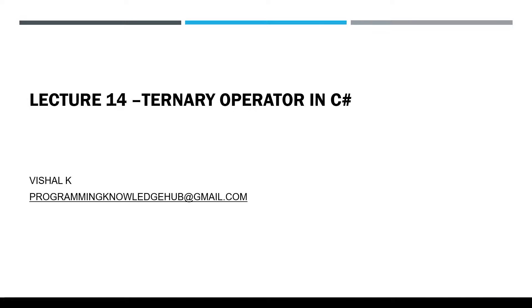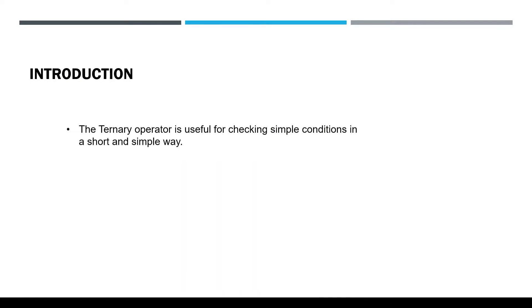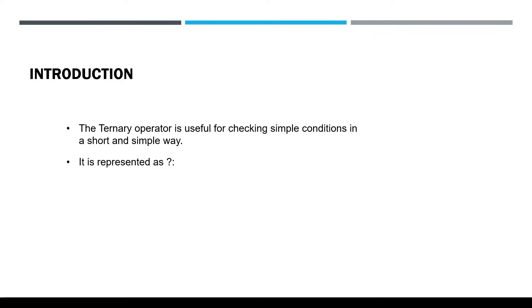Hey guys, welcome back to Programming Knowledge Hub. My name is Vishal. In this lecture I am going to explain an important conditional operator in C# known as the ternary operator. The ternary operator is useful for checking simple conditions in a very short and simple way. It is represented as a question mark and a colon, and the ternary operator is an alternative to the if statement.